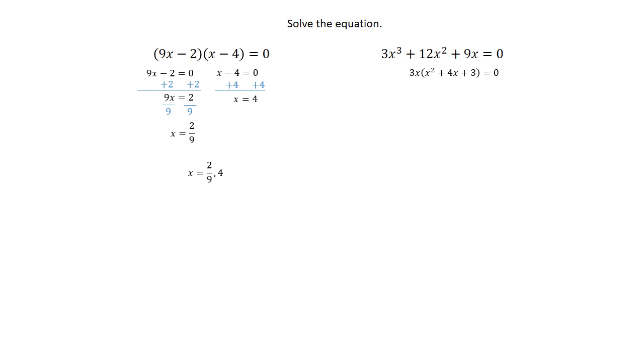Then we can factor the part in parentheses further down, and using trial and error there, we still have the 3x on the outside, and that inside factors to an x plus 3 times x plus 1, because 3 times 1 gives you the 3 on the right, and 3 plus 1 gives you the 4 in the middle. Now we have three factors equal to zero, so that's going to give us three roots.